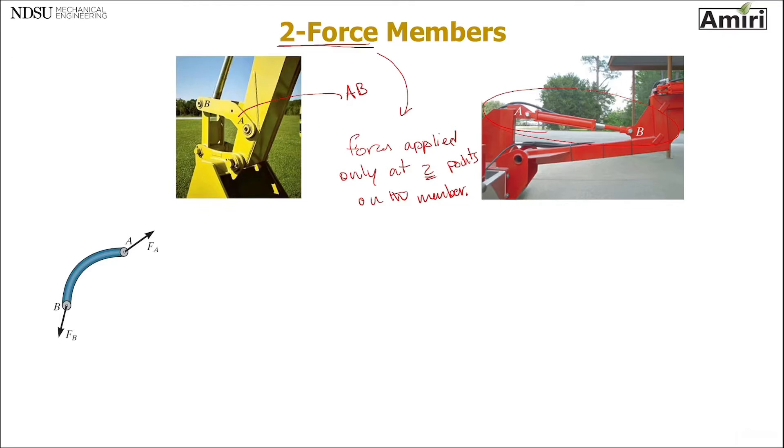So now let's look at the member AB in any of them. Doesn't matter. I think this is closer to this one. Okay, so this member has a force applied at point A and point B, FA and FB. Remember, everything in this course is in equilibrium. So currently, this member AB is in equilibrium.